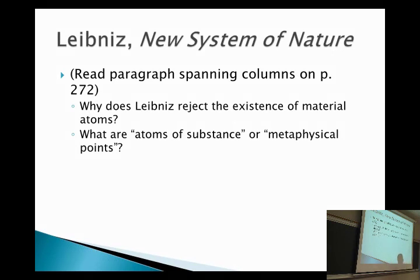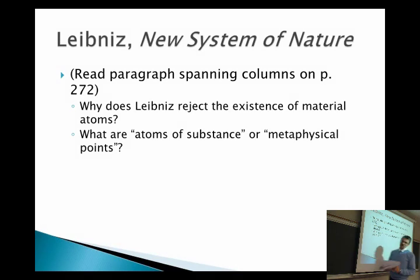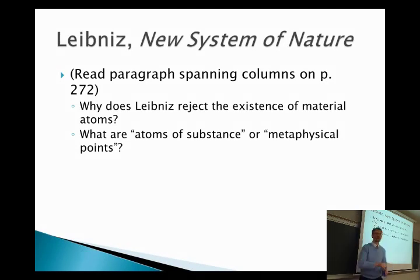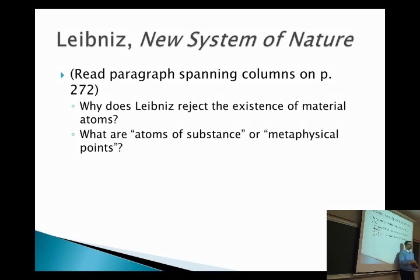So the first thing to realize for Leibniz's philosophy is that he rejects the existence of atoms or material things as being a basic part of the universe. Leibniz is often referred to as an idealist, which doesn't mean like a dreamer or somebody who wants world peace, but an idealist in the sense that the most basic part of reality is not matter, but thought or immateriality. We're going to read about another idealist later in this course named Berkeley.